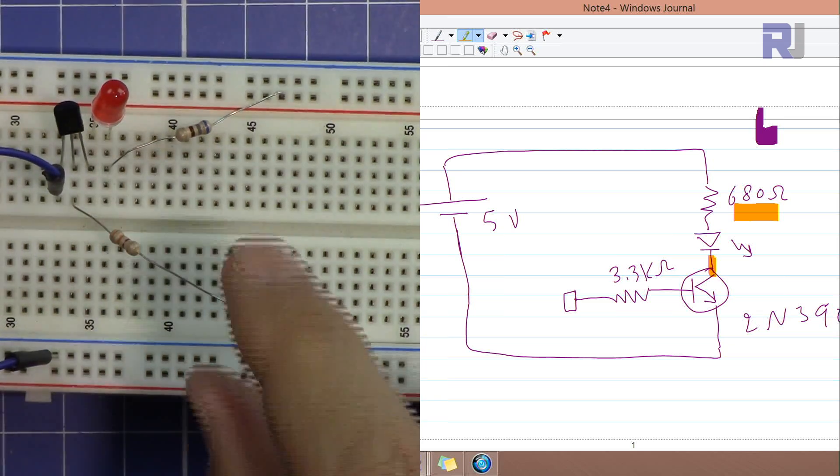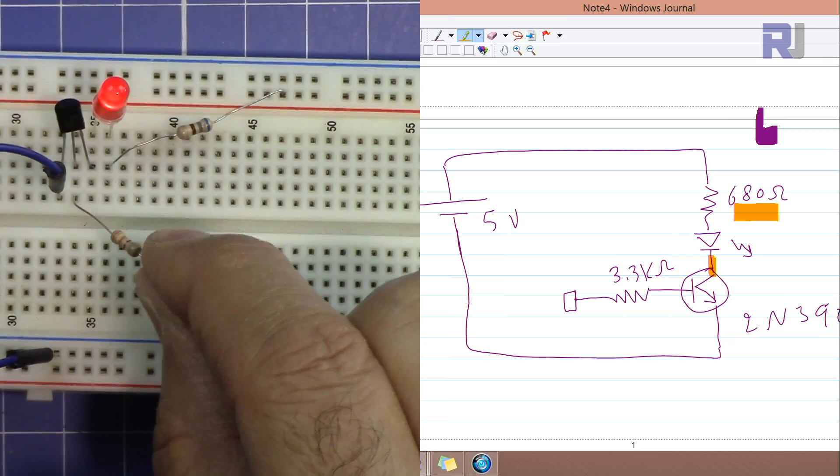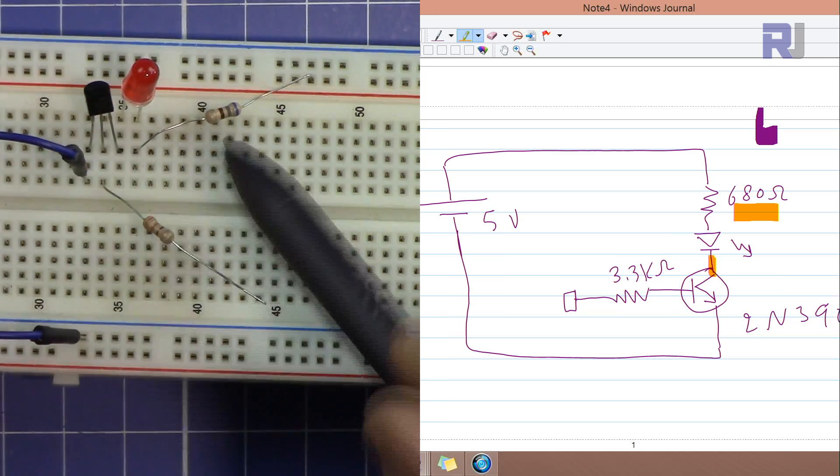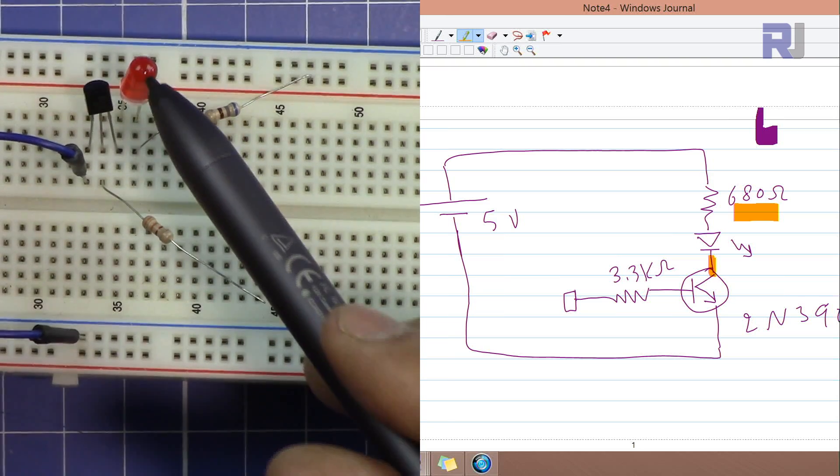But for now it just demonstrates that you don't need any circuitry for triggering the touch with simple three components: one resistor, two resistors, one transistor, and then whatever you want to turn on. In this case, this is an LED.